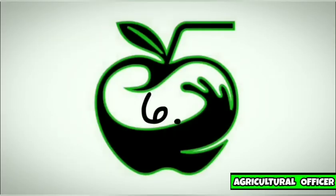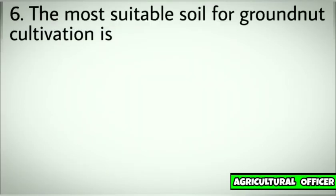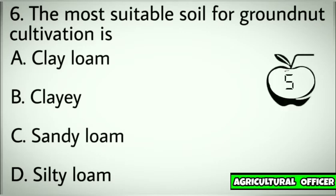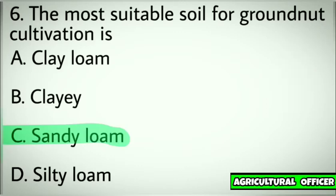Question number six. The most suitable soil for groundnut cultivation is. Options: A. Clay loam. B. Clayey. C. Sandy loam. D. Silty loam. Correct answer: C. Sandy loam.